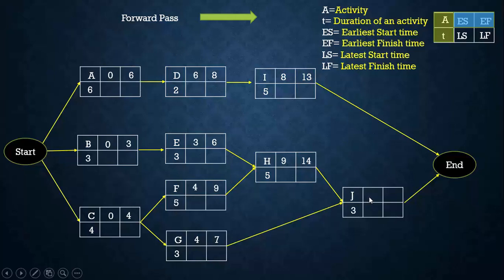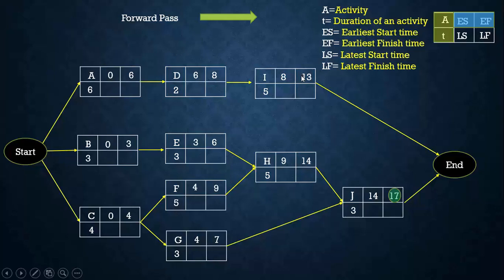For activity J, it needs input from both H and G — two preceding activities. We choose the maximum of 14 and 7 for the earliest start time of J, which is 14. The earliest finish time of J is 14 plus 3, which is 17. We have two tail-end activities with no successors: I and J. The maximum of their earliest finish times — 13 and 17 — is selected as the project duration, which is 17 days.